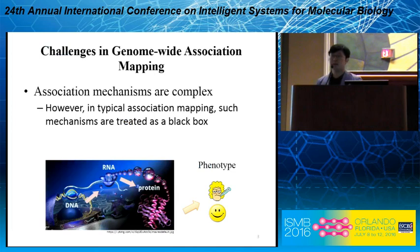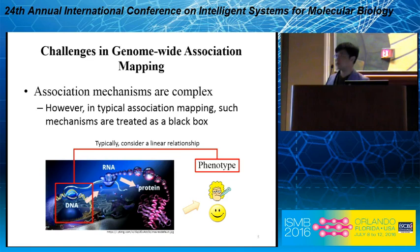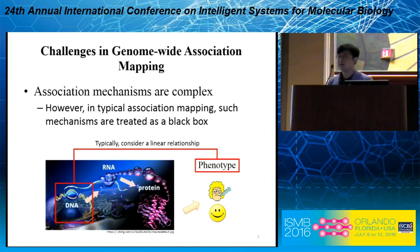Among many challenges in genome-wide association mapping, we would like to focus on one big challenge: association mechanisms between SNPs and phenotypes are very complex. However, in a typical association mapping, we treat them as a black box. For example, DNA is transcribed into RNA, and RNA is translated into protein. Protein, in turn, affects the phenotypic variations. When finding mapping between SNPs and phenotype, we typically consider the phenotype as a linear combination of the SNPs, and if it is a categorically valued phenotype, we add a logistic function on top of that. However, this oversimplifies the real biological mechanisms between SNPs and phenotypes.